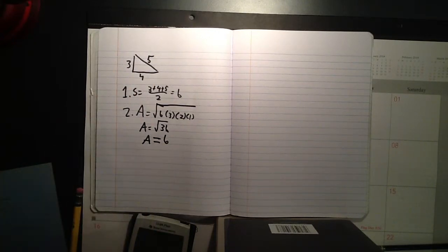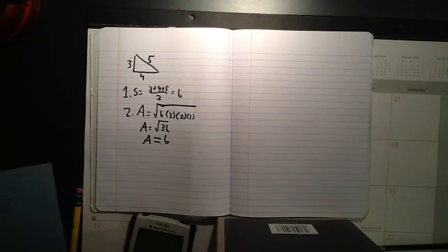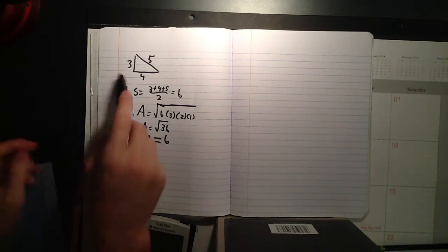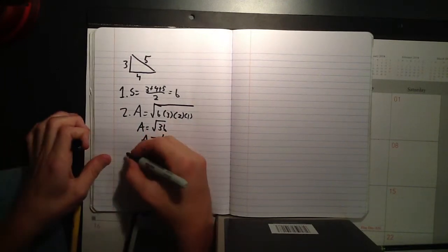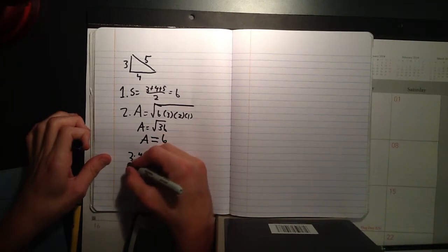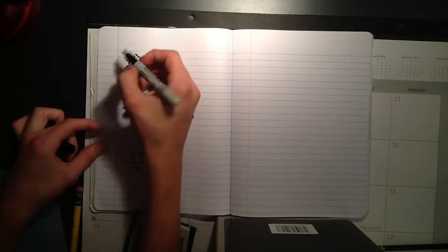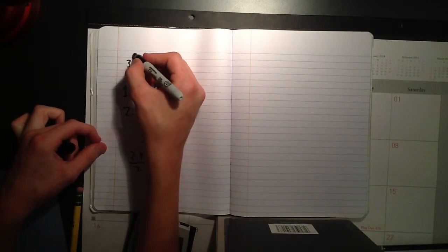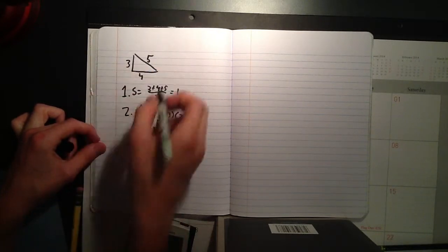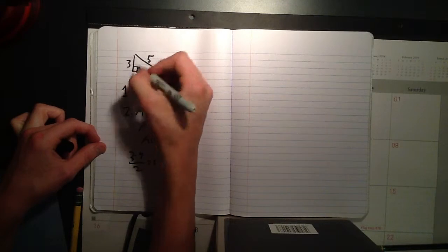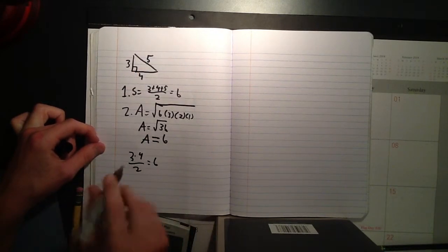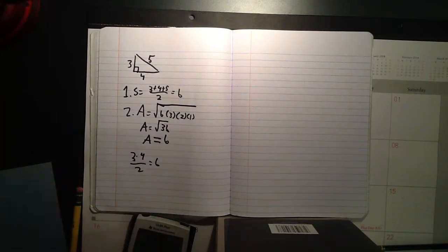We have just found out that we've just proven Heron's formula because using the other method, three times four over two, which equals six as well, because you do the length, the height, times the width, as long as this is at a right angle. You divide that by two, and you will get the area.